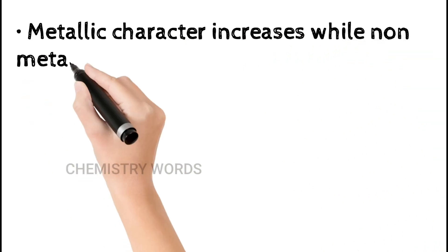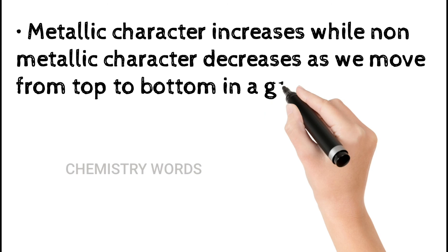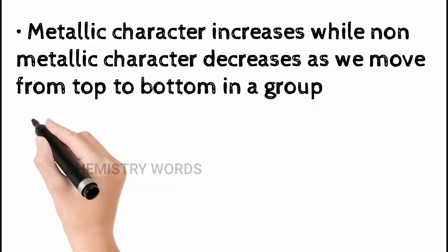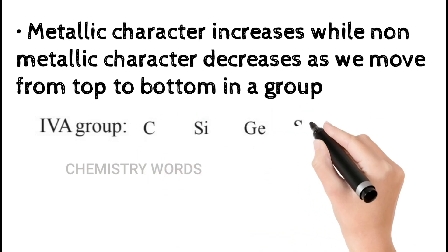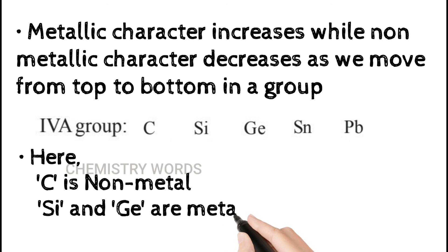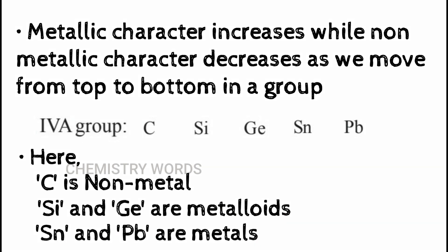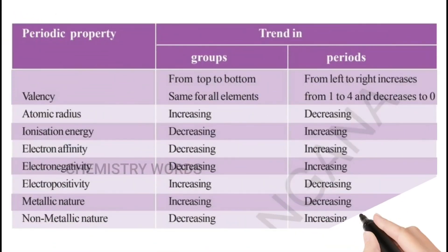Metallic character increases while non-metallic character decreases as we move from top to bottom in a group. For example, in Group 4: carbon is a non-metal, silicon and germanium are metalloids, and tin and lead are metals. Finally, this summary table lists all periodic properties — valency, atomic radius, ionization energy, electron affinity, electropositivity, metallic nature, and non-metallic nature — and shows how they change in groups and periods.